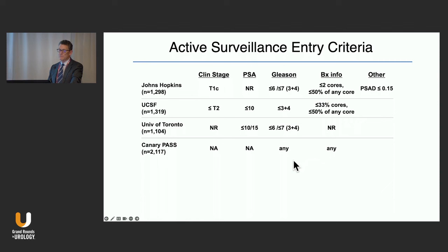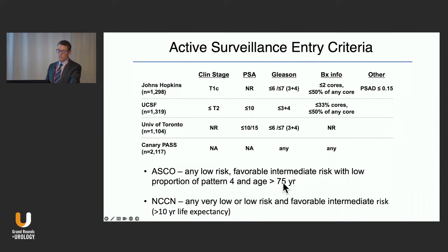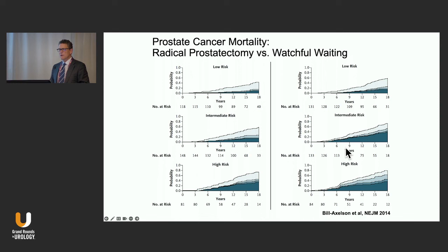ASCO and NCCN definitions were reviewed. When we look at large randomized trials of treated versus untreated patients — the Bill Axelson study — we recognize that for intermediate risk patients the outcome with observation, in terms of death from prostate cancer, is higher. A greater number of intermediate risk patients will die of prostate cancer if on observation versus surveillance.